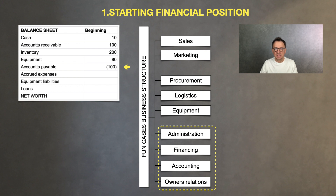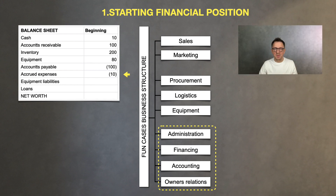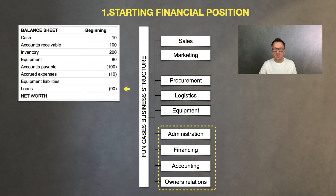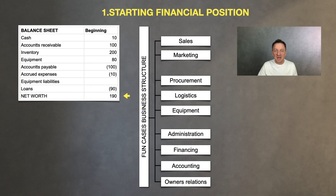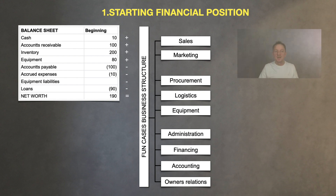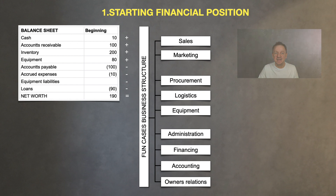We keep accounts payable just at the level of our clients' debts. The accrual expenses to be paid is $10K. We have no liabilities from equipment purchase left, but our loan debt balance is $90K. Finally, we come up with the company's starting net worth or equity, and we do that by adding all the assets minus all the liabilities, so it equals $190K.